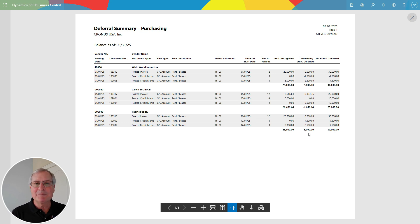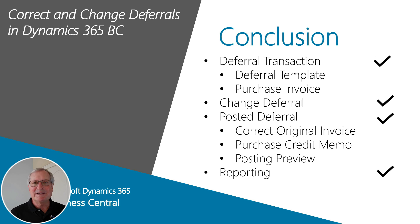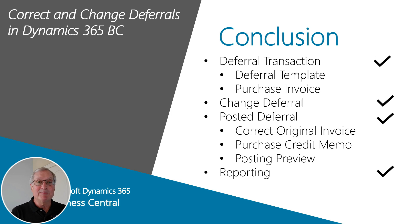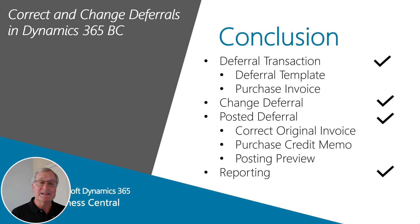We looked at the deferral process in Business Central using purchase invoices, but you can do the same thing on the sales side and in the general ledger. We looked at how to correct and change deferrals, and I recommend using the purchase invoice credit memo — from both a reporting and business process standpoint, all those transactions and corrections will be linked together, improving the audit trail. The options for changing deferrals depend on the status of the transaction: when it's open and unposted you can change almost anything; once posted but unpaid you can still make changes; but once paid you need a credit memo. The reporting is detailed and will back up your balance sheet.